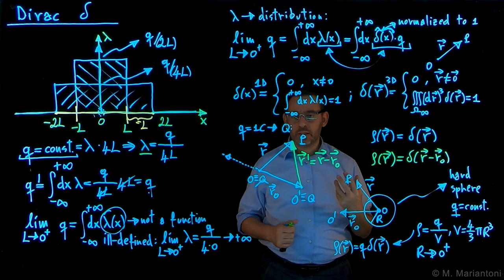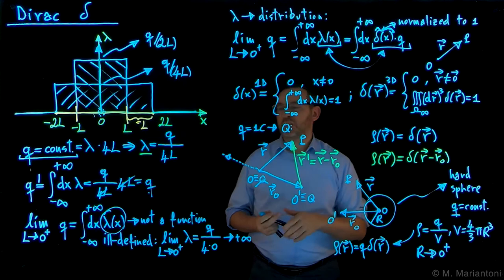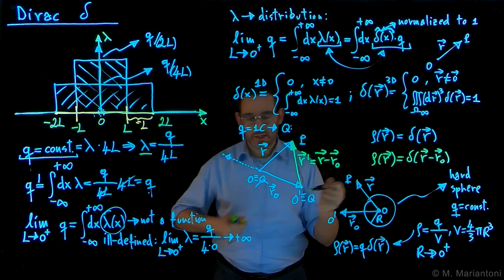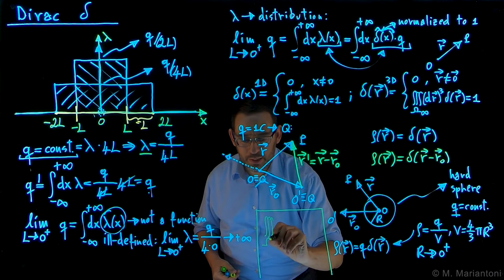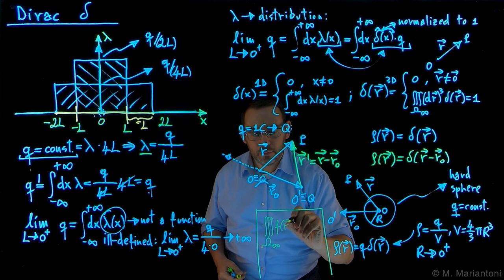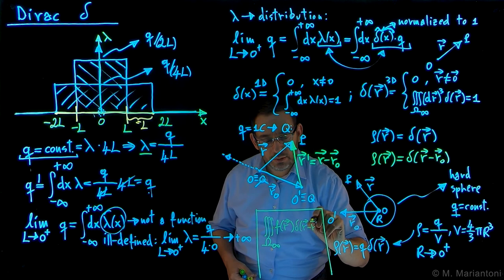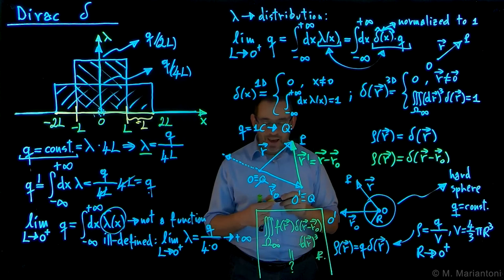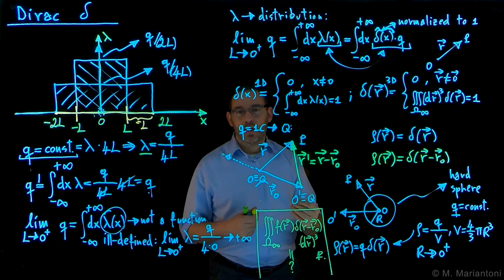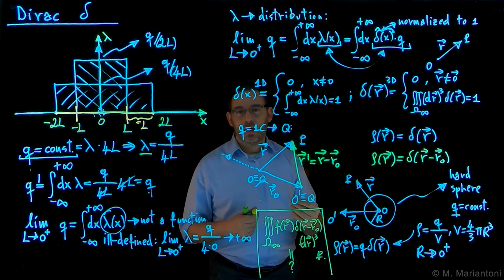There is one last property worth discussing for the Dirac delta, which I want you to think about. What is the integral over the entire space of a given scalar function f of r multiplied by a Dirac delta of r minus r0, integrated in d³r? I want you to think about this in piazza. It's a very simple result and a fundamental property of the Dirac delta. We are going to need it eventually when we do multipole expansions of the electrostatic potential in 342.